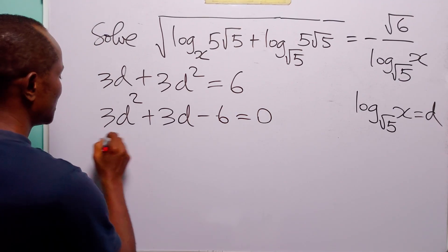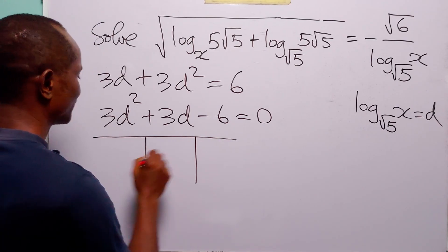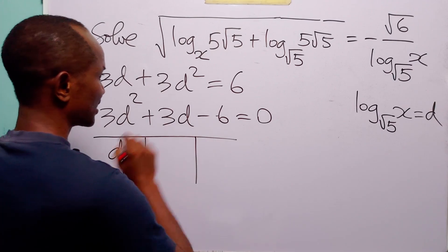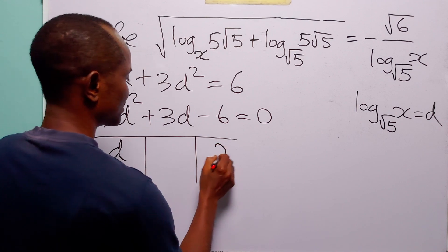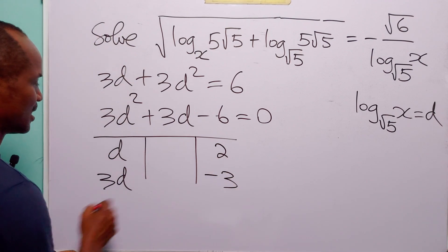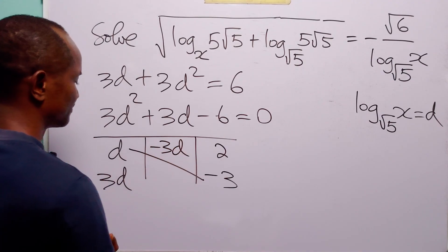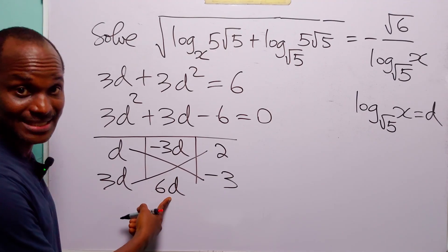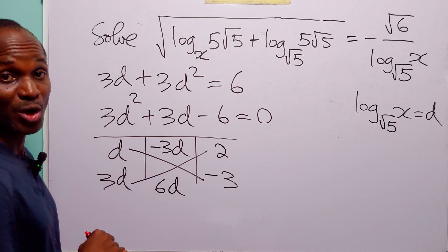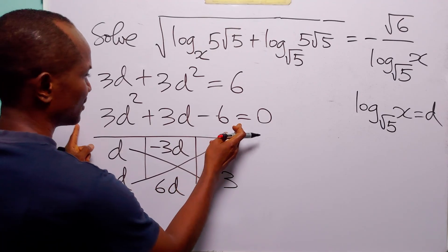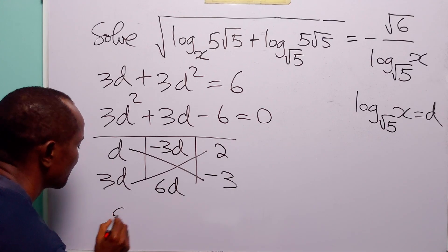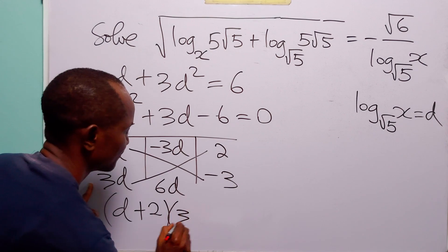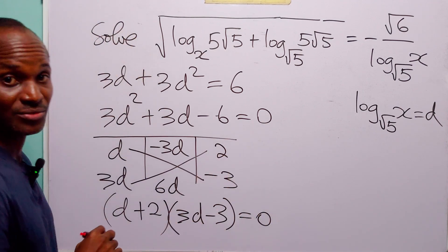We can factorize this equation using the table method. The factors of 3d squared are d and 3d, and the factors of minus 6 are 2 and minus 3. Now d times minus 3 is minus 3d, and 3d times 2 is 6d. 6d minus 3d is equal to plus 3d. So we can factorize the left-hand side as d plus 2 multiplied by 3d minus 3, and this is equal to 0.